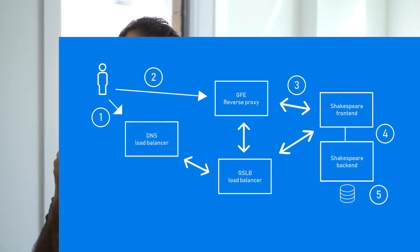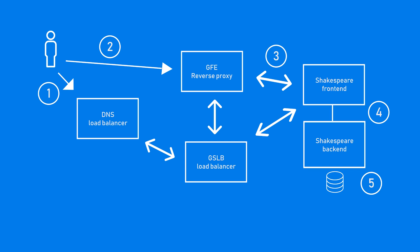The reverse proxy takes the request, converts it into an RPC call, and calls the application frontend. The application frontend is a machine representing the Shakespeare service. The reverse proxy again calls the GSLB load balancer to determine which application frontend server can handle the RPC call. GSLB picks an available application frontend server, and the GFE sends the request to it. The application frontend takes the RPC call, does whatever it needs to do, and calls a backend server or database directly, or calls other services inside the Google network.